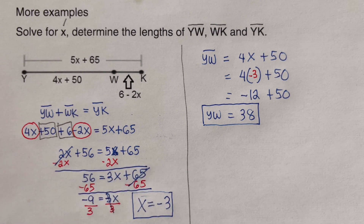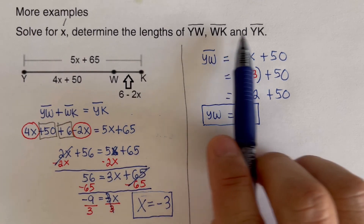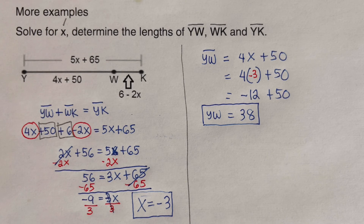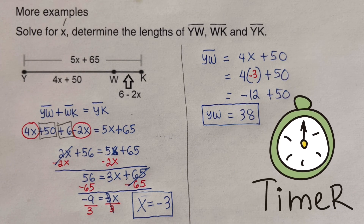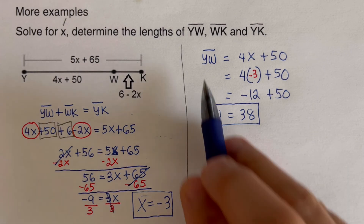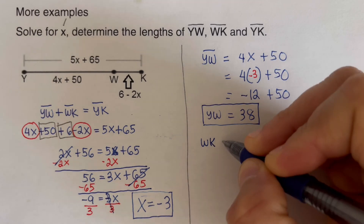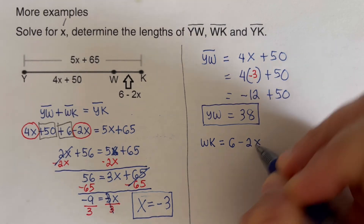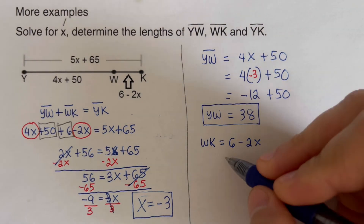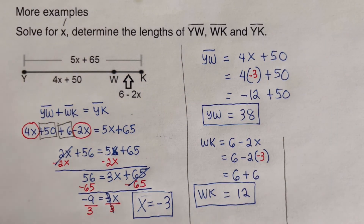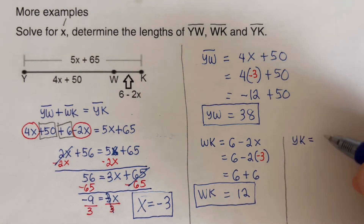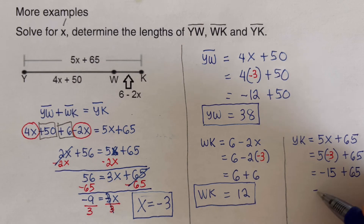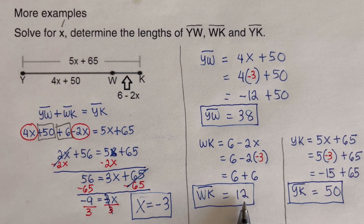I encourage you to pause this video and try to solve for segments WK and YK. WK equals 6 minus 2X. Plugging in X equals negative 3, WK equals 12. And the length of YK is 50.